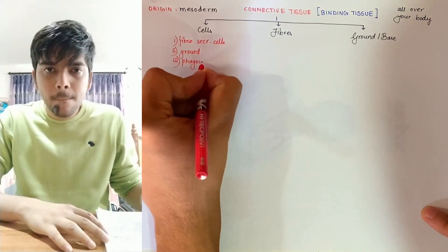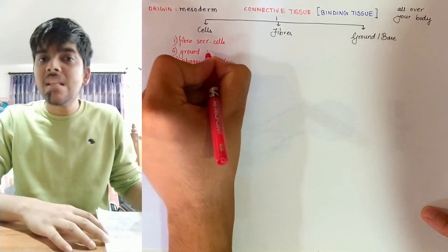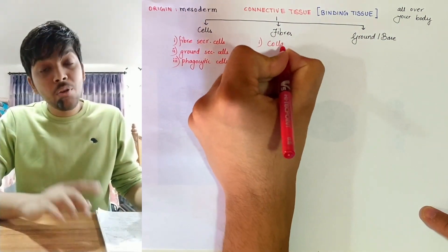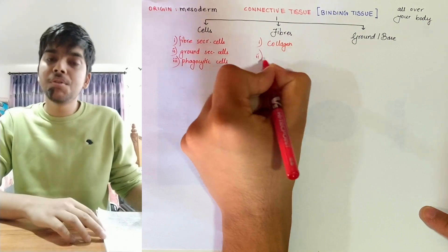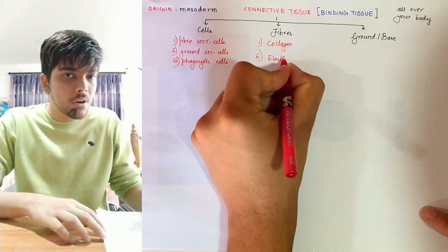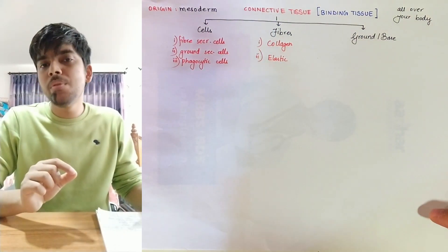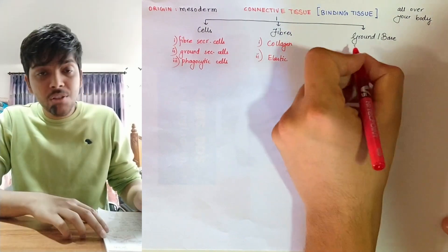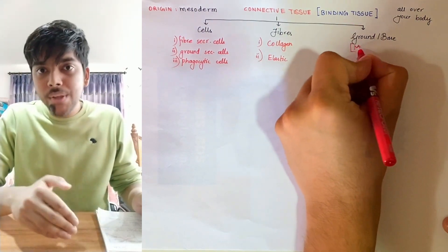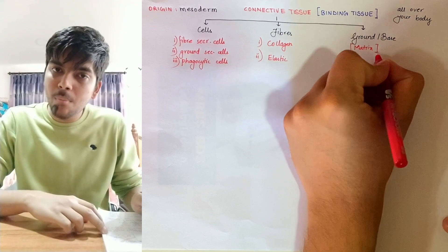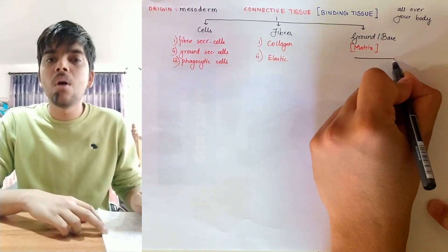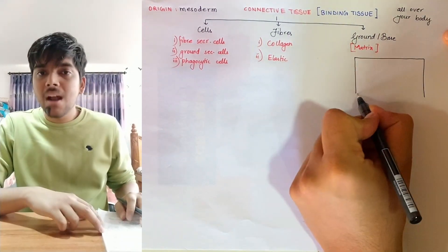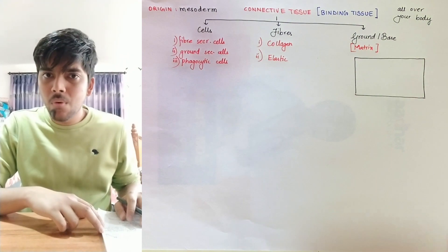Various types of cells are found. For fibers, there are two major types: collagen fibers, which are white in color due to the presence of the protein collagen — also known as white fiber — and elastic fibers, which are yellowish in color due to the presence of the protein elastin — also known as yellow fiber. Then there's the ground or base on which the cells and fibers lie, which is made up of polysaccharides.